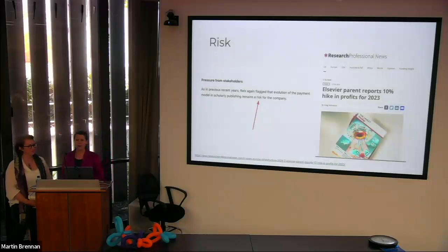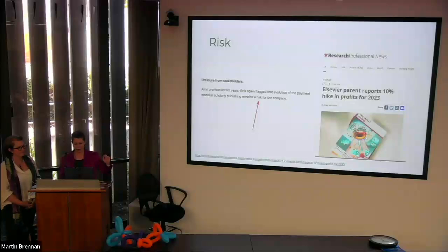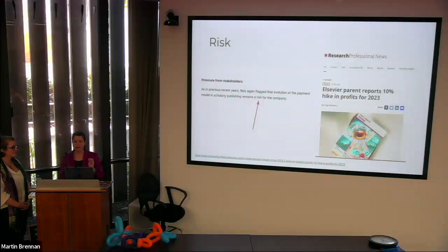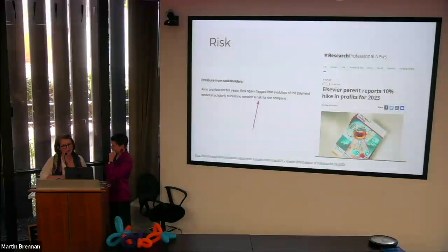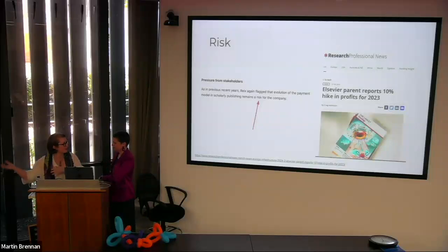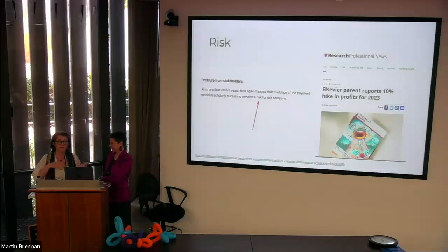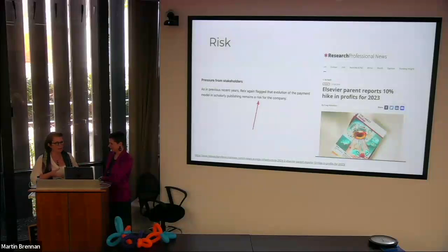Here is a different version of risk — from Elsevier's public company reports, they flag that the payment model in scholarly publishing remains a risk for the company. So which way do you want to run this risk? It's just being used in multiple different ways and being thrown out there. Keep your eyes open: risk, trust, sustainability. And as a personal reflection — I felt what I wanted to do I could not do at a university, which is how I ended up at a for-profit company, but I'm now able to do more thinking about this. There's risk of losing academics who move out if you don't have an environment in which they can work.